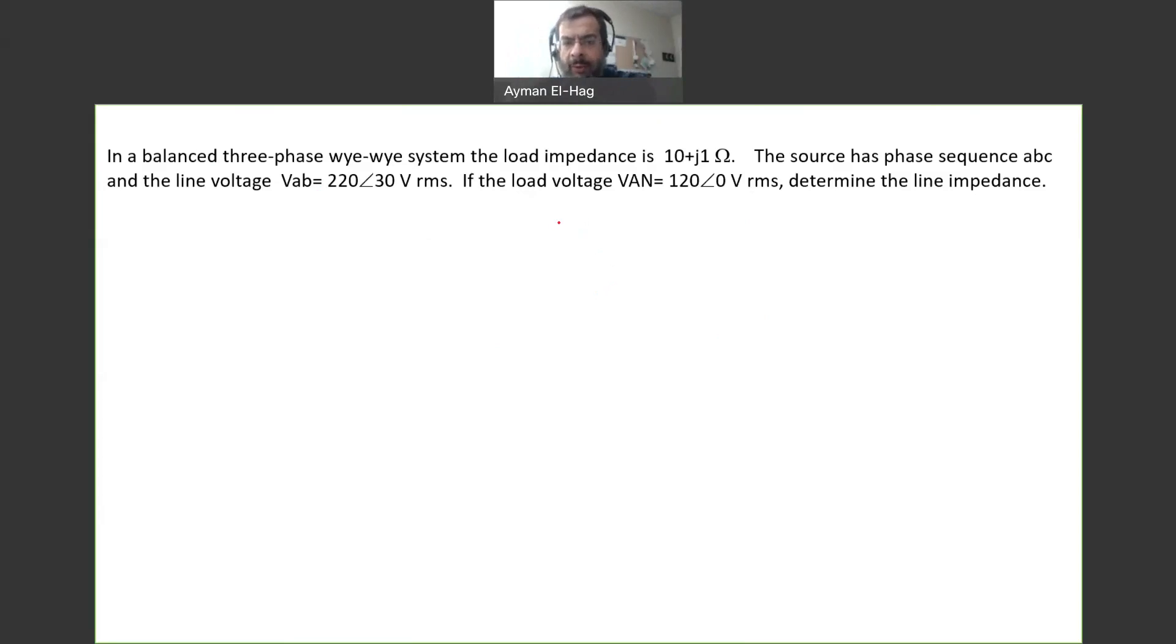Let's draw this starting from the source. So here we have the source as Y connection. We have here Y-connected source, and here it is A, B, C, and this is N. So what we have is basically VAB. VAB is equal to, as given to us, 220 angle of 30.